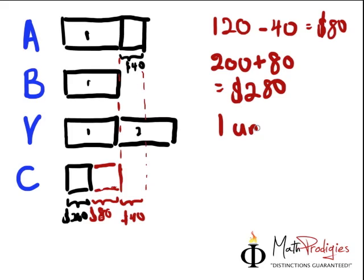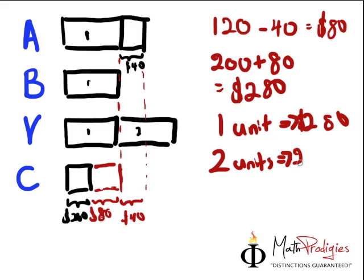If one unit equals $280 and Vincent has two units, how do you find Vincent's answer? Two units equals $280 times two.